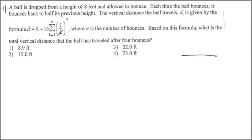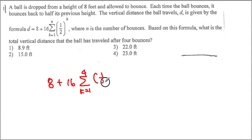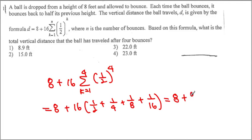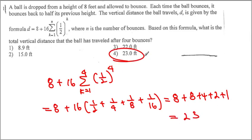So n has to be equal to 4. Then what we end up getting is 8 plus 16 times the sum from k=1 to 4 of (1/2)^k. When k equals 1, we get 1/2; the next is 1/4, then 1/8, then 1/16. Once we multiply 16 to all of them, we get 8 + 4 + 2 + 1, which equals 23. Therefore our answer is choice 4.